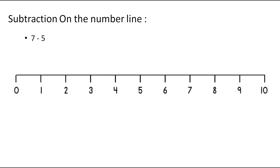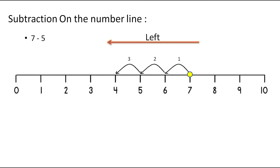Now let's understand subtraction on the number line. Whenever we subtract the numbers by using number line, we have to point out the first number given in the question. Here it is 7, so we will point out on 7. As the number to be subtracted is 5, we have to move 5 steps to the left from the number pointed 7. The first move will be on 6, the second move is on 5, the third move is on 4, the fourth move is on 3 and the fifth move is on 2. The answer of 7 minus 5 is 2.